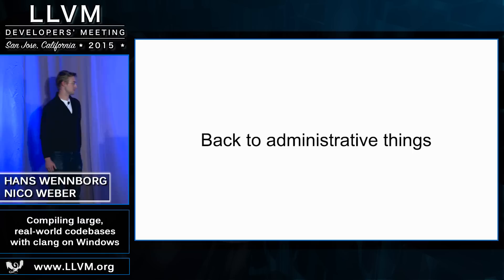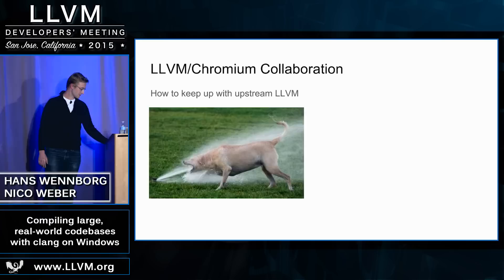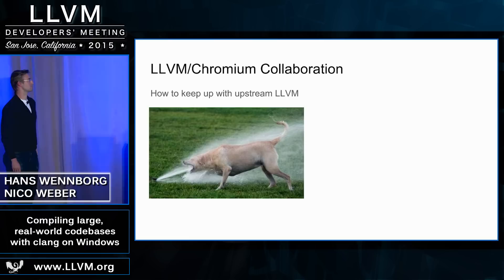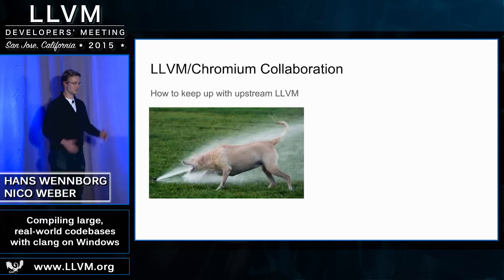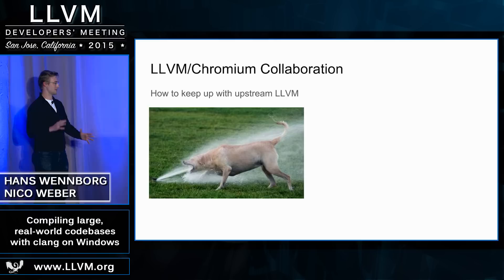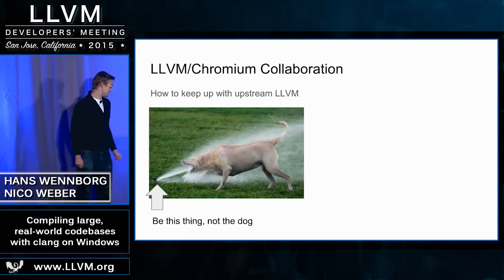That gives you an idea of how Microsoft extensions look — and maybe you want to use some in your Windows-specific files. Back to more administrative things about how our project is set up: there was a BOF yesterday about how it's super hard to keep up with upstream LLVM — it's understandable how you get into that situation, where you hack something up locally, it kind of works, your team starts using it, and before you know it you have a fairly sizable fork. Our solution to this is simply to be upstream. Don't fight upstream, be upstream.